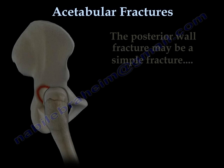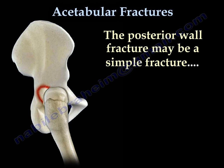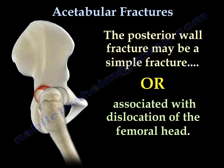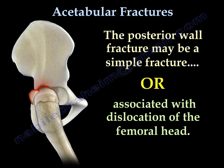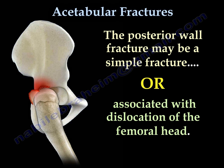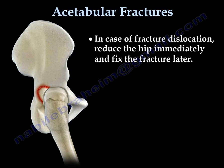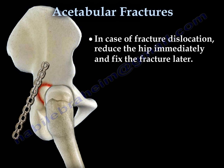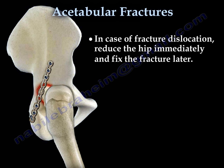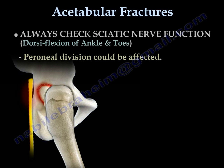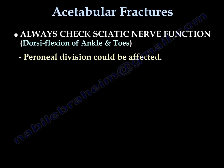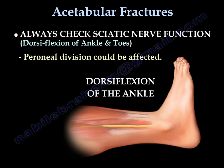The posterior wall fracture may be a simple fracture or it may be associated with dislocation of the femoral head. In case of fracture dislocation, reduce the hip immediately and fix the fracture later if fixation is needed. Always check sciatic nerve function. The peroneal division of the sciatic nerve may be affected — check dorsiflexion of the ankle and toes.